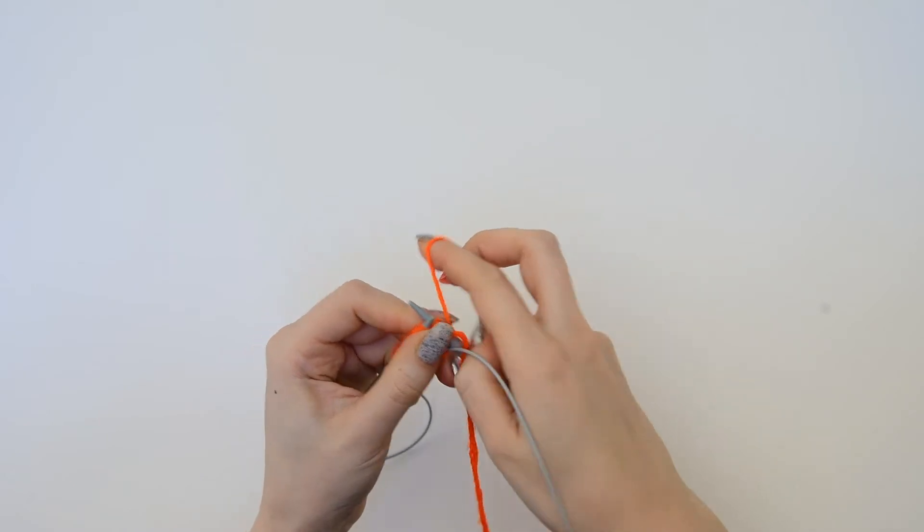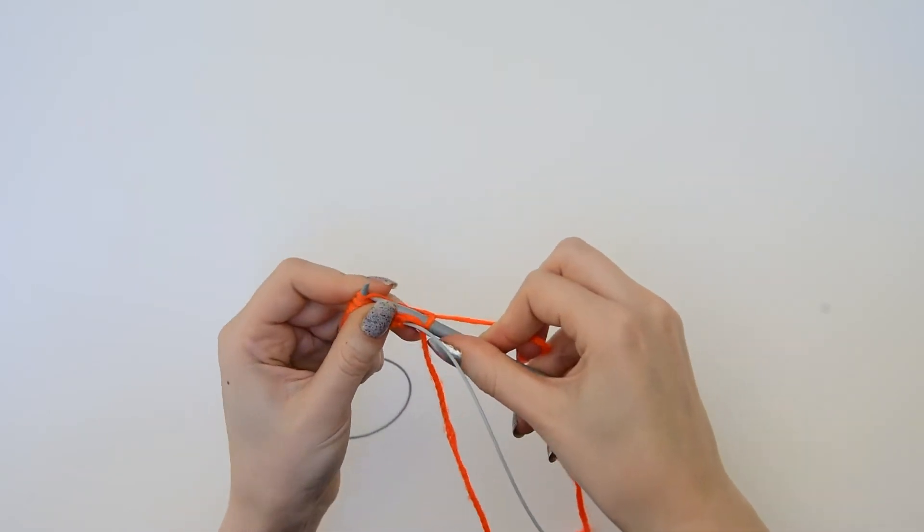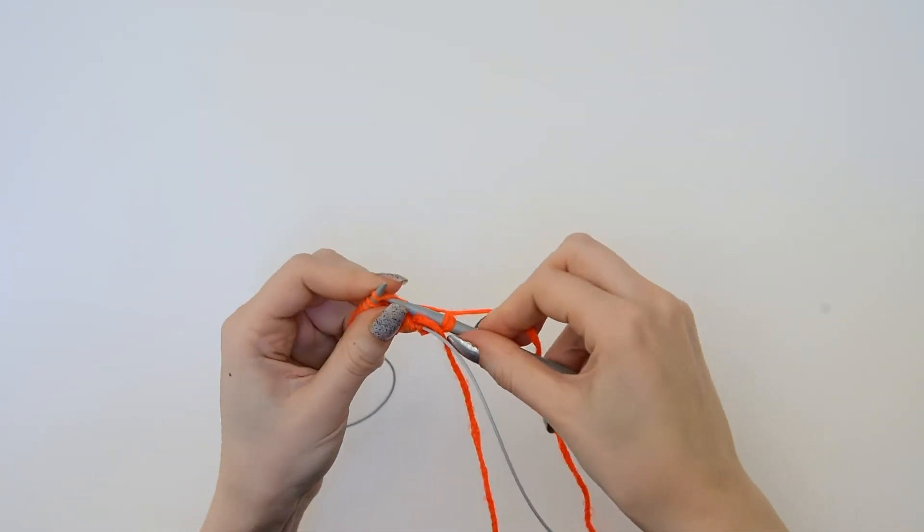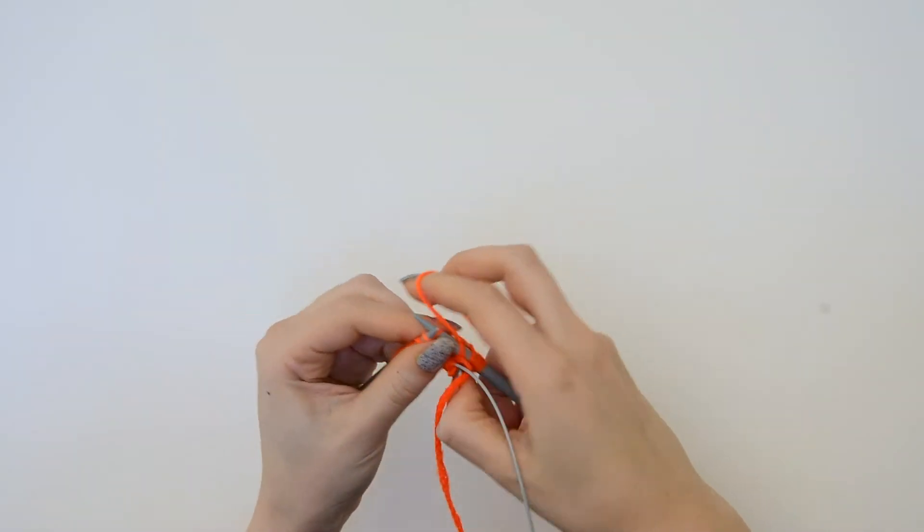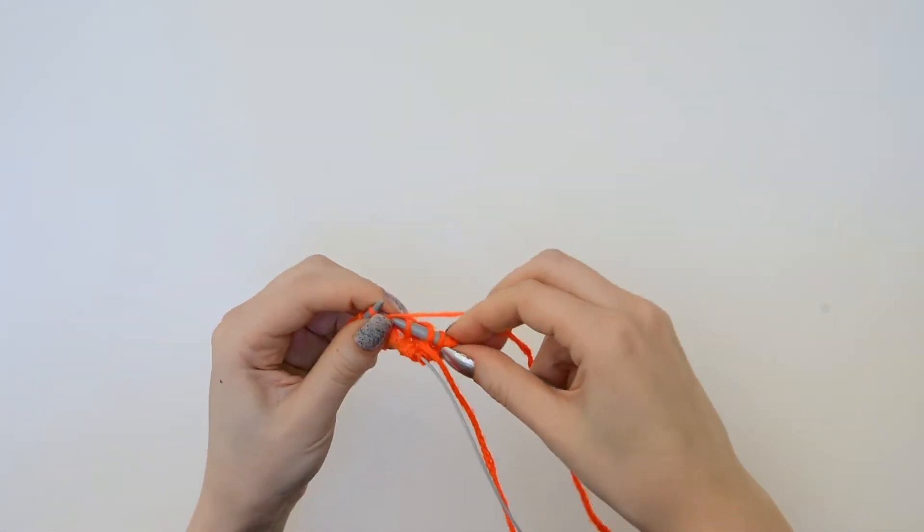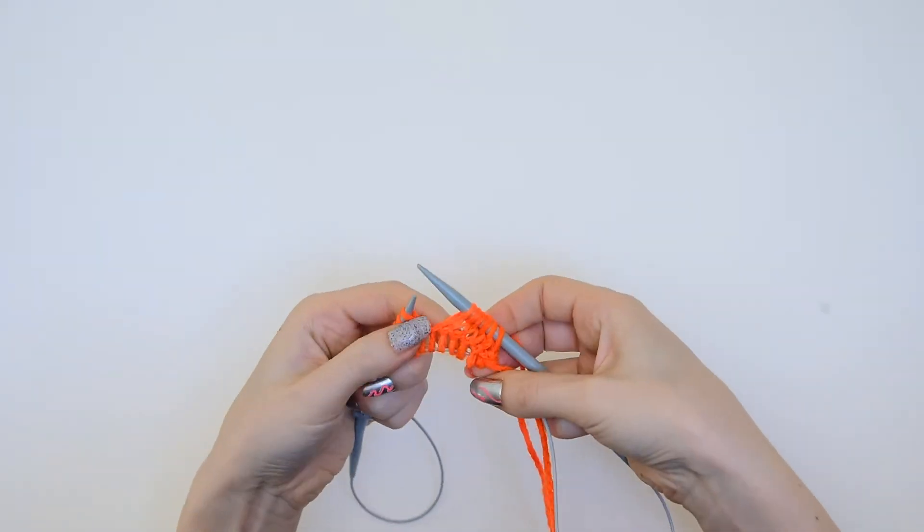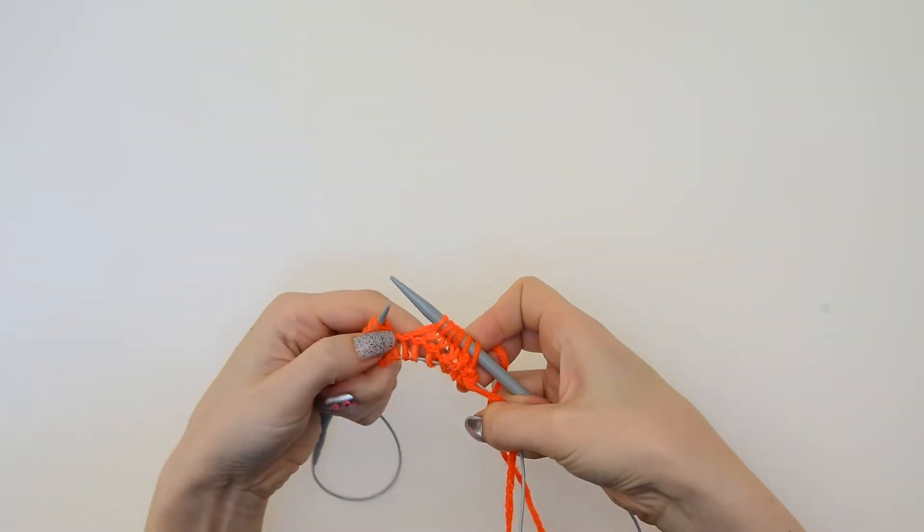As I knit, you'll notice that I don't have enough stitches to fill my needle. So I'm using the magic loop method and pulling the cord out as I go. You can see that ridge forming a little bit.